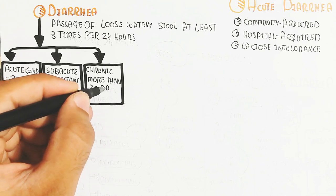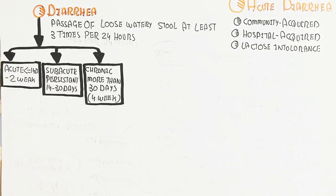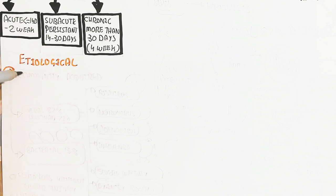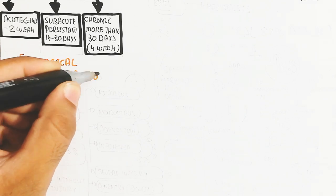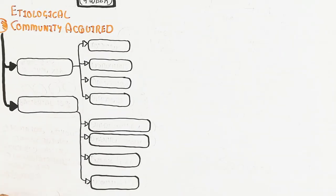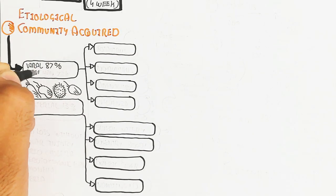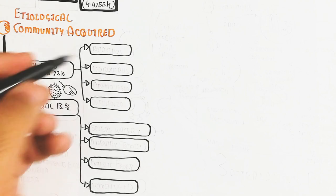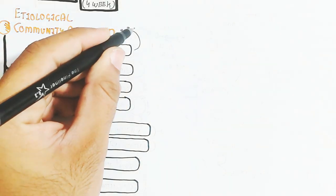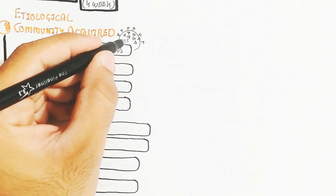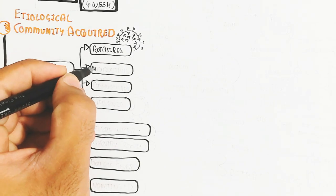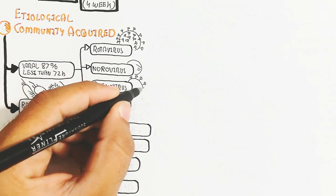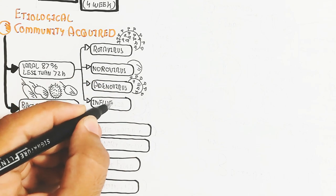Community acquired diarrhea: viral causes 87%, lasting less than 72 hours, while bacterial causes 13%. Viral can be rotavirus, norovirus, adenovirus, and sometimes influenza virus can also cause acute community acquired diarrhea.